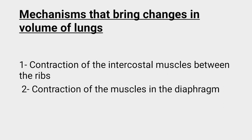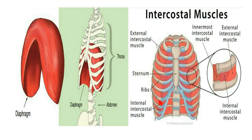The mechanisms that bring changes in volume of lungs are basically two. First is contraction of the intercostal muscles between ribs — 'inter' means between and 'costal' means ribs, so these are the muscles present between the ribs. The lungs are very fragile organs enclosed in a rib cage, and these ribs have muscles between them. Second is contraction of the muscles in the diaphragm.